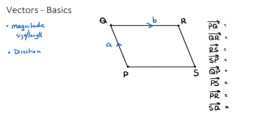Vector a goes from P to Q, which is different from Q to P because it would be the same length but in the opposite direction — that would be negative a. The vector from Q to R is defined as vector b. So in this quick exercise: P to Q is clearly just vector a, and Q to R is clearly just vector b.